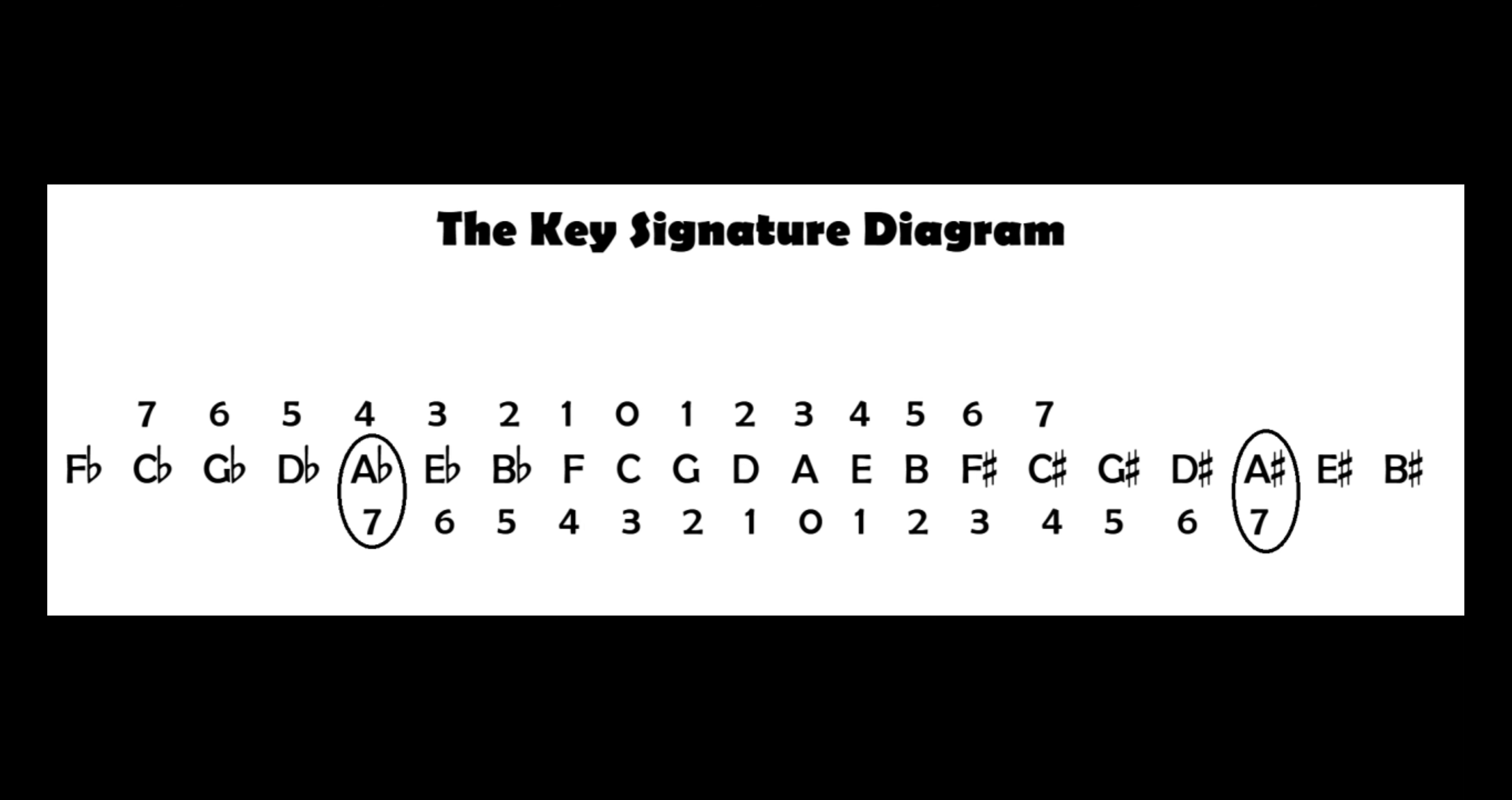Write major above the diagram, minor below, flats to the left and sharps to the right. This is the complete key signature diagram. Let's learn how to read it.